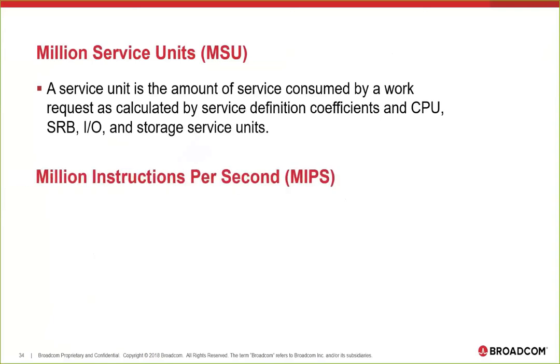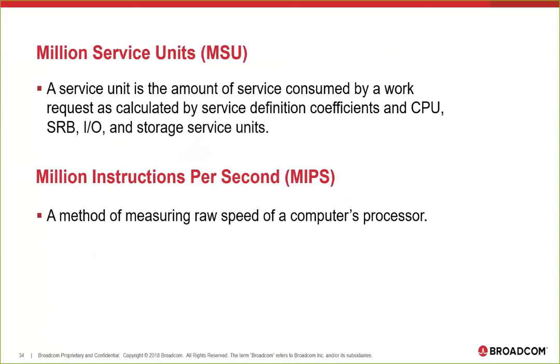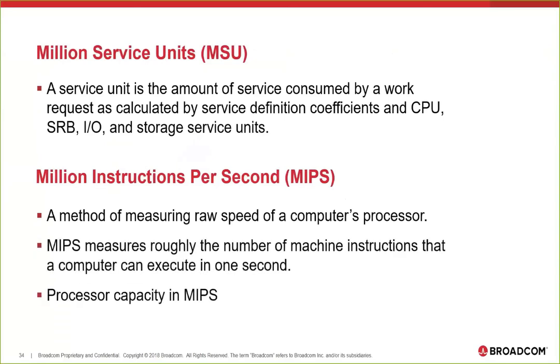MSUs — service units — you'll hear that a lot. It's just a measurement, like miles per hour, of the consumption of work or amount of service. MIPS is the other very common one, especially around pricing. The processing capacity is measured in MIPS — how many instructions can it process in a second? The raw speed of the processors — like miles per hour or miles per gallon.